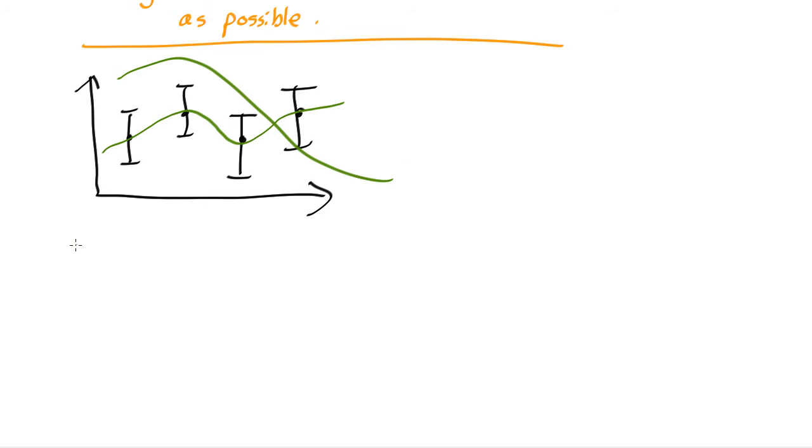Well the answer is what's called reduced chi-squared. So reduced chi-squared is just equal to the normal chi-squared value divided by the number of degrees of freedom.